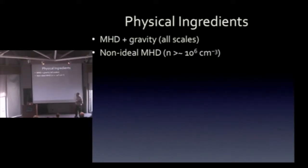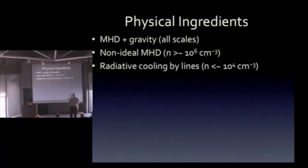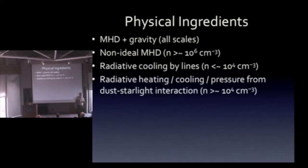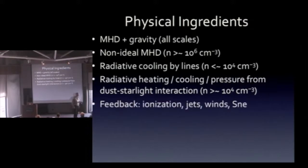Once the density exceeds about 10^6 particles per cubic centimeter, non-ideal effects probably start to become important. For radiative cooling, there's cooling by lines at densities below about 10^4 per cubic centimeter, but once the density exceeds that, you get collisional coupling between gas and dust. Now your radiative processes are controlled by dust–starlight interaction, so you need to think about three temperatures: the radiation field, the dust, and the gas — all coupled.